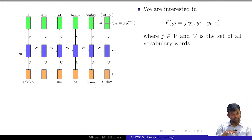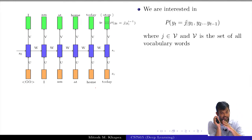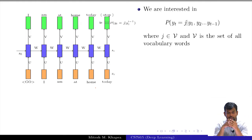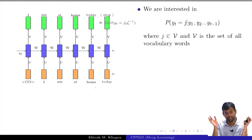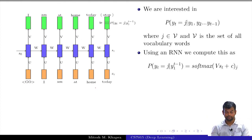We will see this in more detail and write down the model equations. We are interested in the probability of the word at the t-th time step, where j belongs to vocabulary V. If you have a vocabulary of 10k or 20k words — for English it is actually much higher — then you want to predict a distribution over this vocabulary.